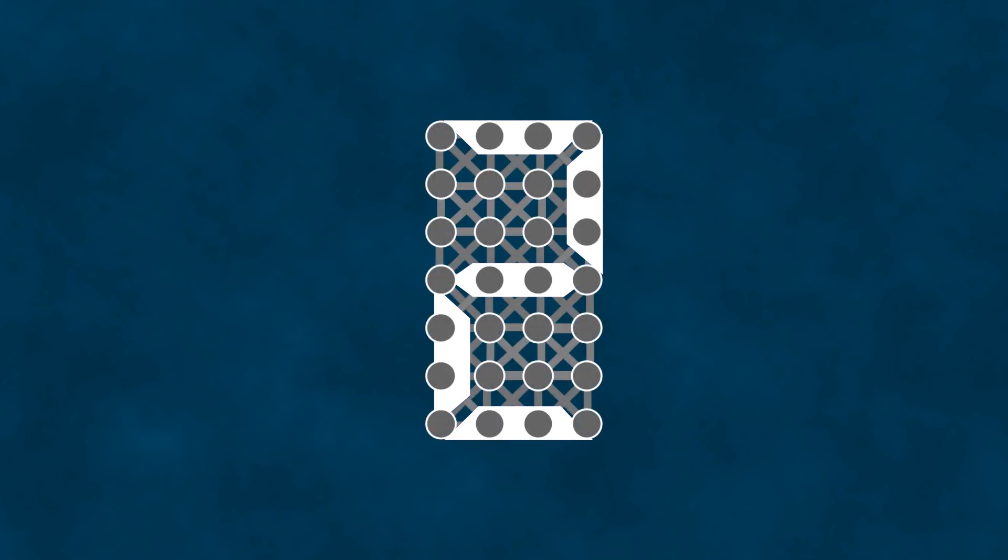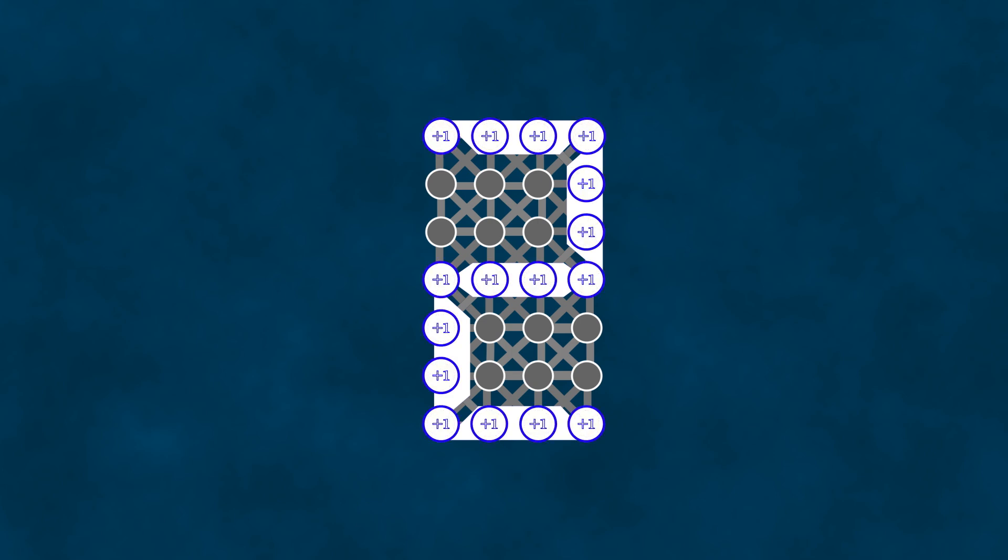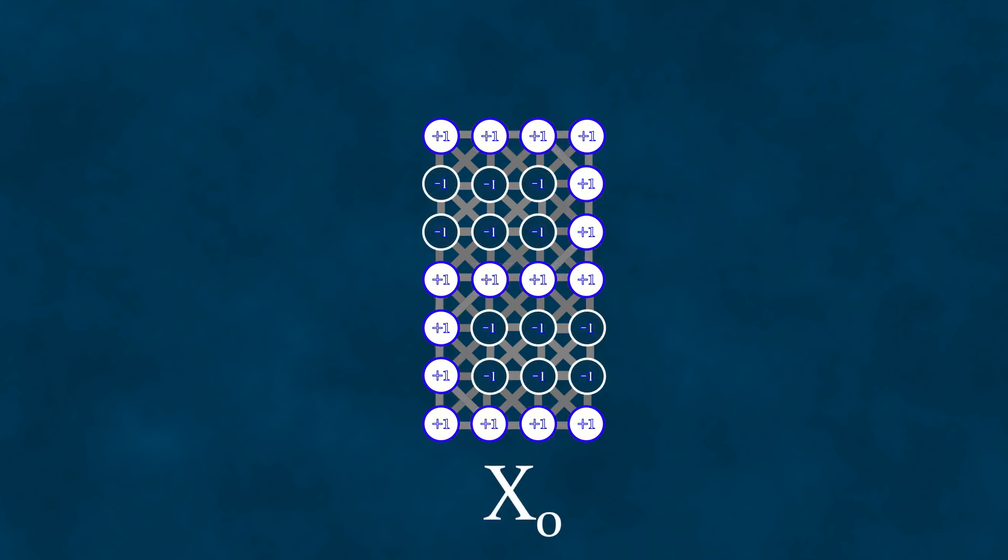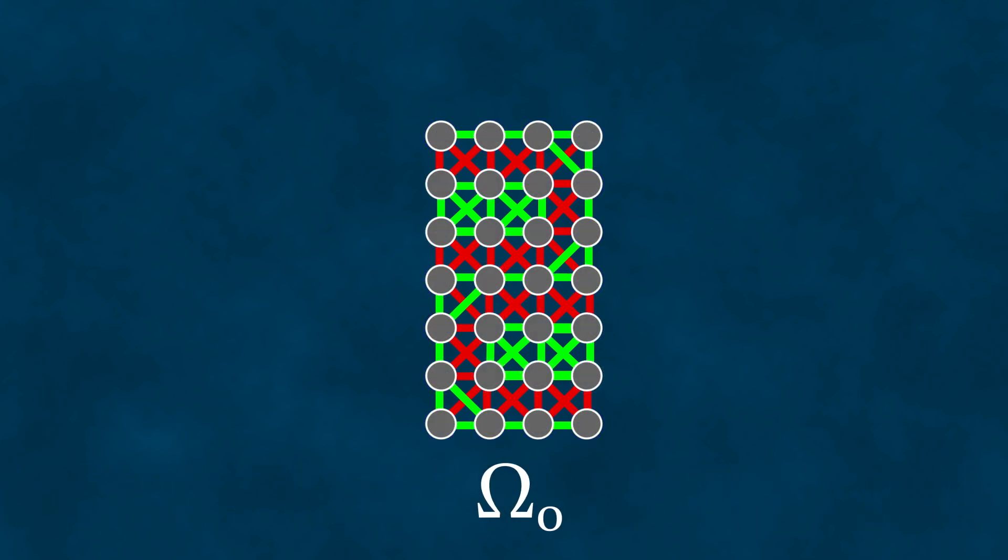Let's say we want to teach our network to recognize the number two. First, we'll generate an image of this number using neuron pixels. Those that should be illuminated are assigned a value of plus one, while those that should remain dark are assigned a value of negative one. Let's call this set of neuron values X zero. We'll load our image into the network and optimize it, adjusting the weights so that the network's energy is minimized. We'll call the set of weights that minimizes the energy for X zero, Omega Zero. This Omega zero will essentially store information about the images the network has learned for future use.